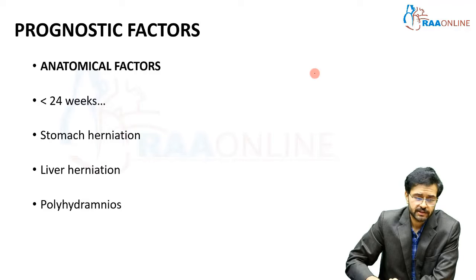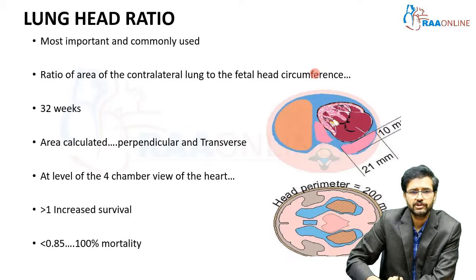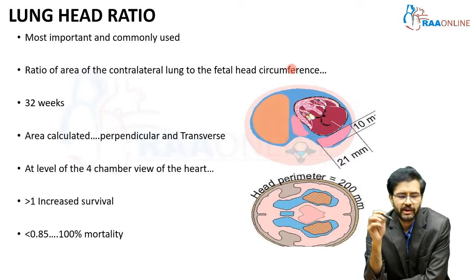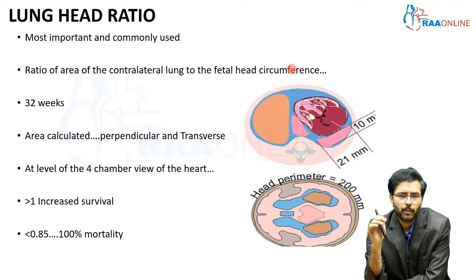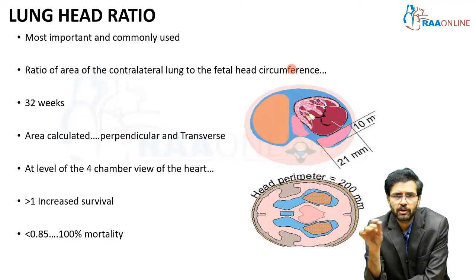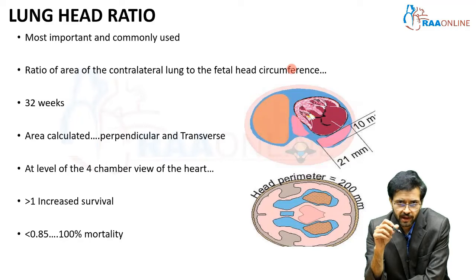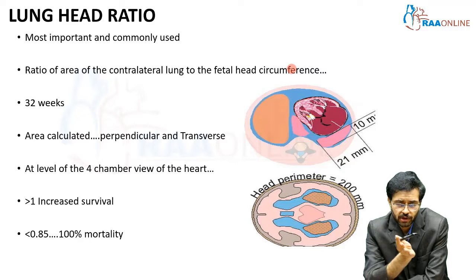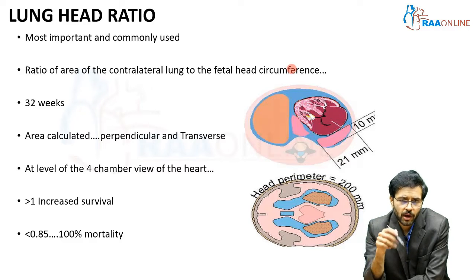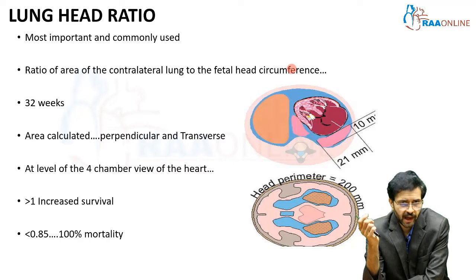One of the most important antenatal factors for prognostication of CDH is the lung head ratio. It is the ratio of the area of the contralateral lung to the fetal head circumference, measured close to 32 weeks of gestation. The area is calculated using the perpendicular vertical and transverse measurements of the contralateral lung at the level where the four chambers of the heart are seen. This area is then divided by the head circumference.